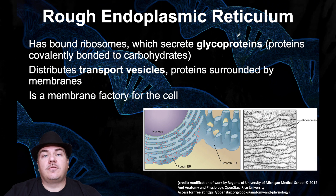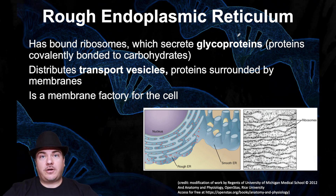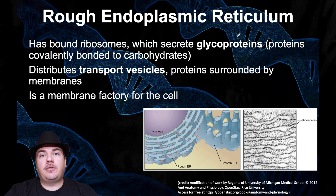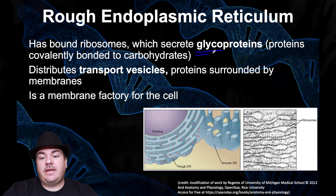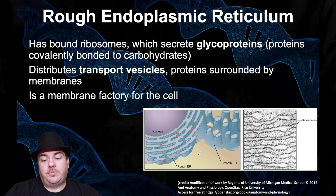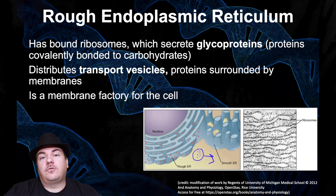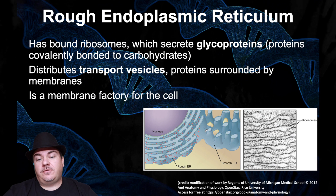The rough ER does different jobs. Remember, rough ER is called rough ER because there are ribosomes attached to it — and ribosomes build proteins. So the rough ER is going to be building proteins, specifically a type called a glycoprotein, which is a protein with a carbohydrate attached to it. The rough ER builds the proteins, then wraps a membrane around them to create a transport vesicle and sends those proteins to the next place they need to go. The rough ER is also the membrane factory for the cell.